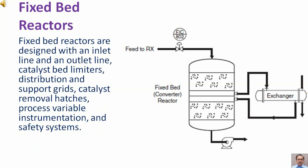Fixed bed reactors are designed with an inlet line and an outlet line, catalyst bed limiters, distribution and support grids, catalyst removal hatches, and process variable instrumentation and safety systems.